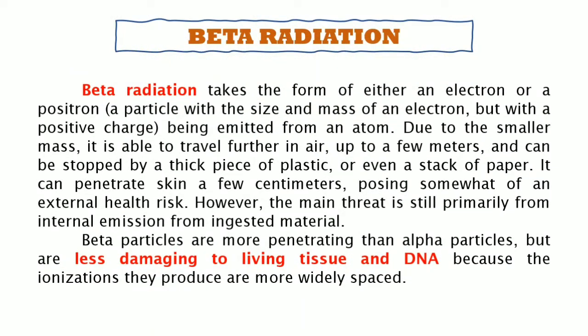Next is beta radiation. Beta radiation takes the form of either an electron or a positron being emitted from an atom. Due to the smaller mass, it is able to travel further in air, up to a few meters, and can be stopped by a thick piece of plastic or even a stack of paper. It can penetrate the skin a few centimeters, posing somewhat of an external health risk. However, the main threat is still primarily from internal emission from ingested material. Beta particles are more penetrating than alpha particles but are less damaging to living tissues and DNA because the ionizations they produce are more widely spaced.